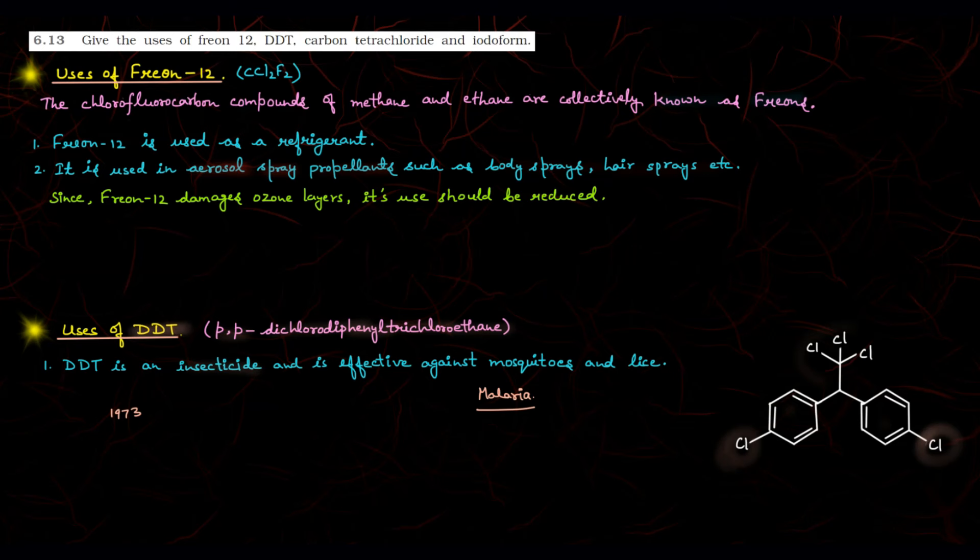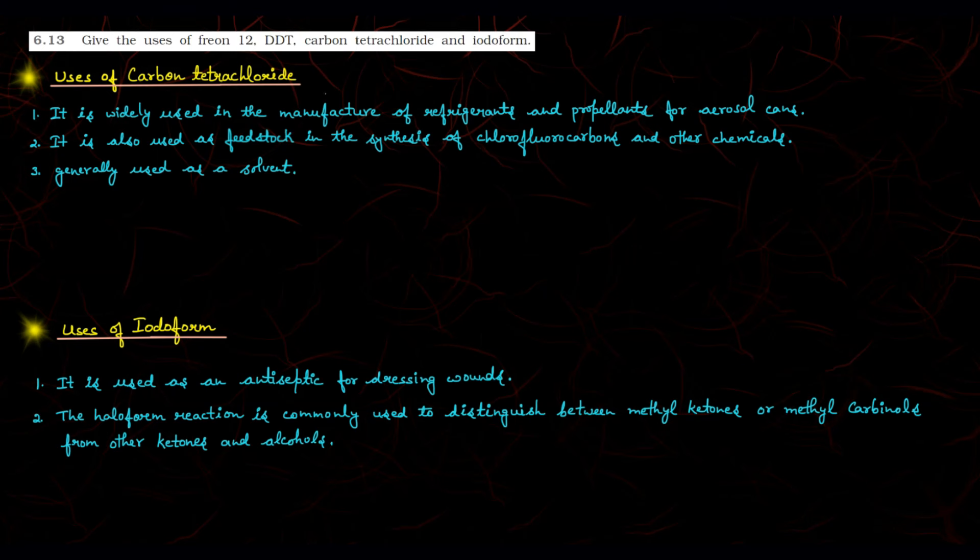Next is Carbon Tetrachloride. What is Carbon Tetrachloride? CCL4. Where do we use this? It is widely used in the manufacture of refrigerants and propellants for aerosol cans. Where do we use this as a refrigerant? And where do we use this? It is used as a feedstock in the synthesis of chlorofluorocarbons and other chemicals. If you have to synthesize chlorofluorocarbons, then it is used as a feedstock.